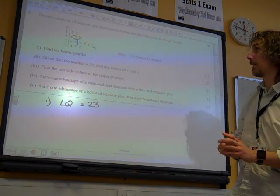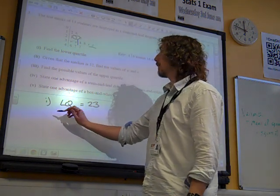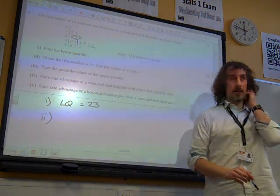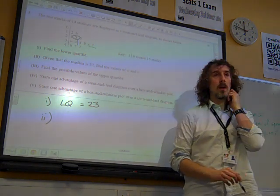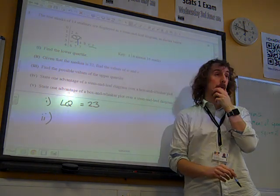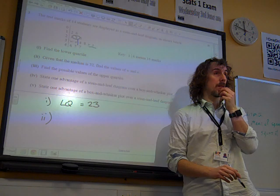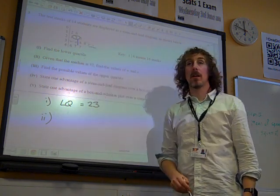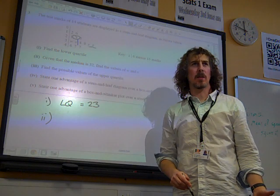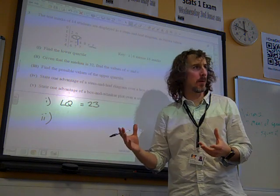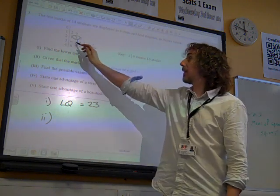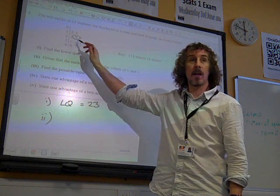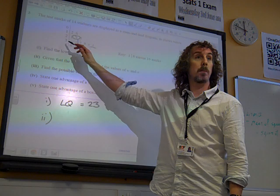Given that the median is 32, find the values of W and X. Now there's all sorts of ways that you can think about this. The median is 32, that means that's the average of those two values. Now I'm going to show you this algebraically, but you could probably think it through without having to do it that way. So this X is sometimes quite hard to think about what this means, but the number represented by that is 30 plus X.